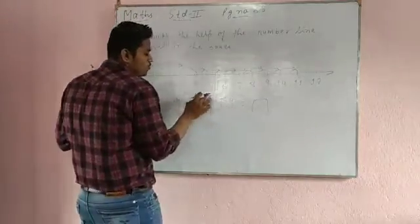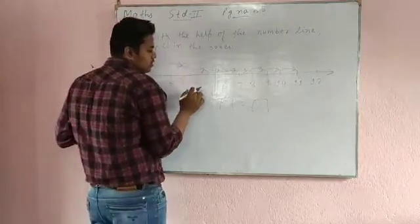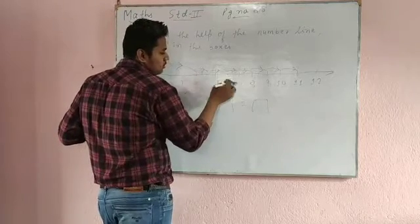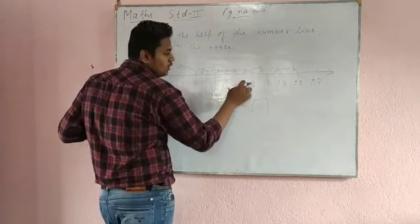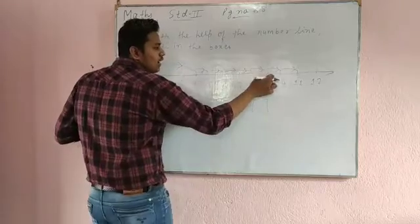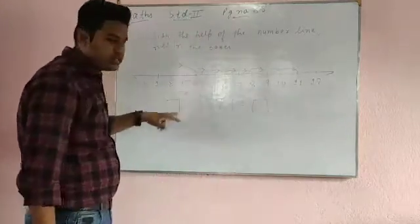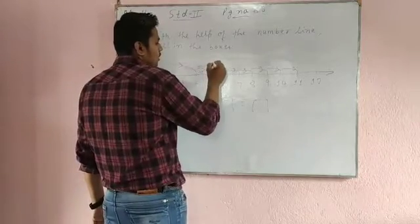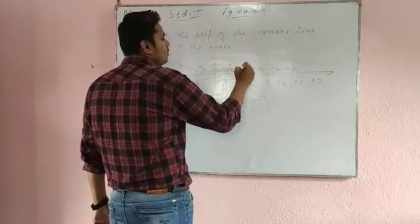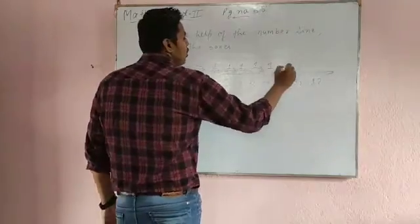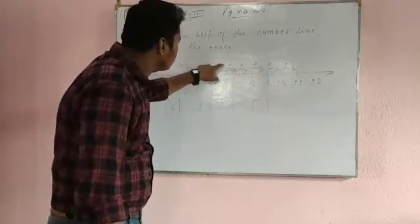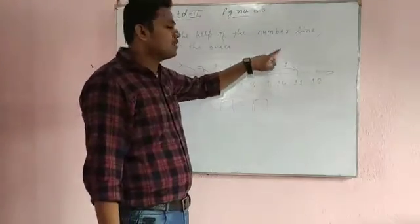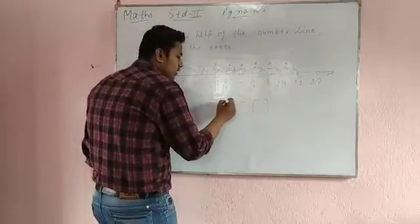So you have to fill here. So how many jumps has he done? See, one, two, three, four, five, six, seven. Now see, four is here. Now how many jumps? This is one jump, another jump, another. See how many? One, two, three, four, five, six, seven. So you just write here, seven.